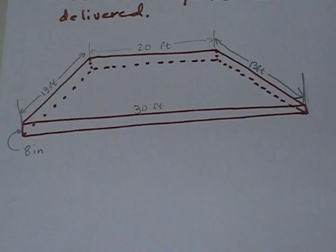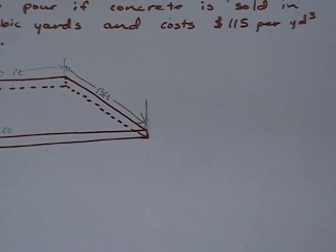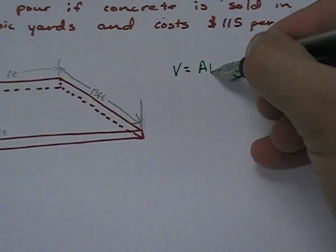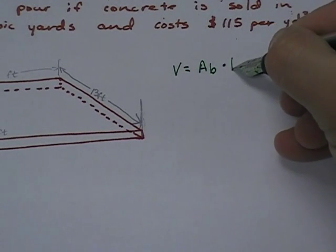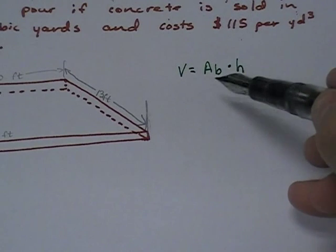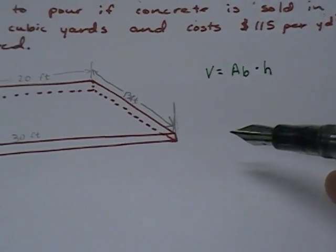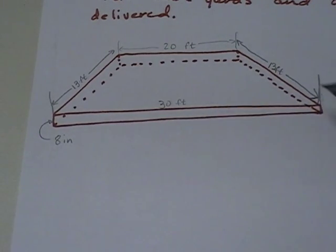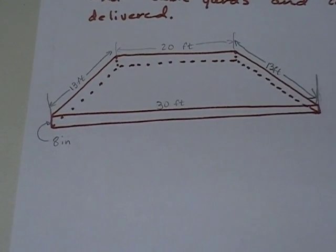We need to start with finding the volume of this figure. Now, the volume of any figure can be found by taking the area of the base times the height or the thickness. The area of the base times the height or the thickness. Well, the area of the base, the base being the part that's on the ground, that's a trapezoid. So we need to find the area of this trapezoid.